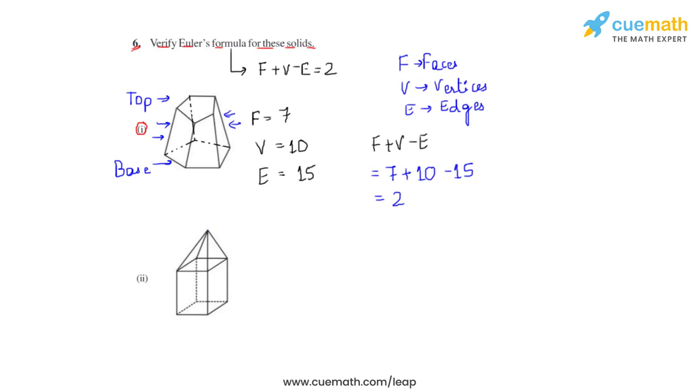Hence, we can say that for the first part, we have already verified Euler's formula because the left hand side and the right hand side are equal as per Euler's formula. Let us now move on to the second part or the second solid.